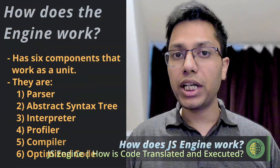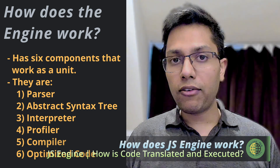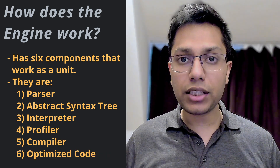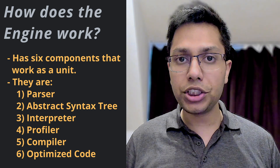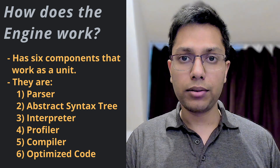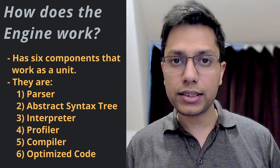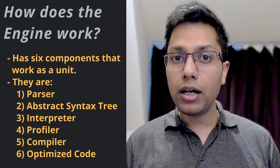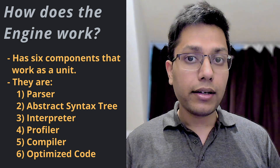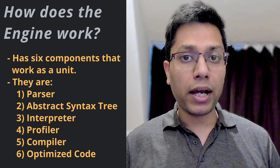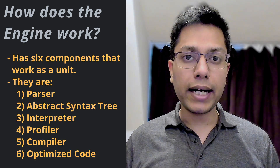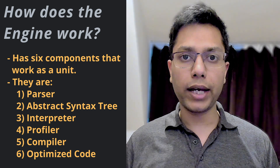But how does the JS engine actually work? The JavaScript engine has six primary components that work in conjunction with each other as a cohesive unit. These are: parser, abstract syntax tree, interpreter, profiler, compiler, and optimized code. We will look at each of them briefly to understand how they interrelate and work together.